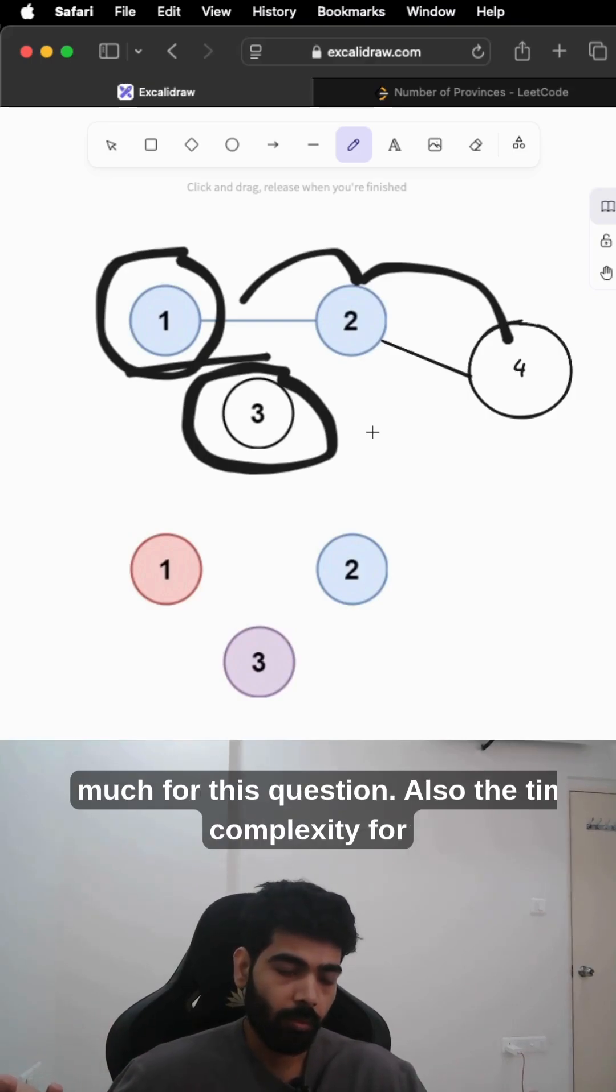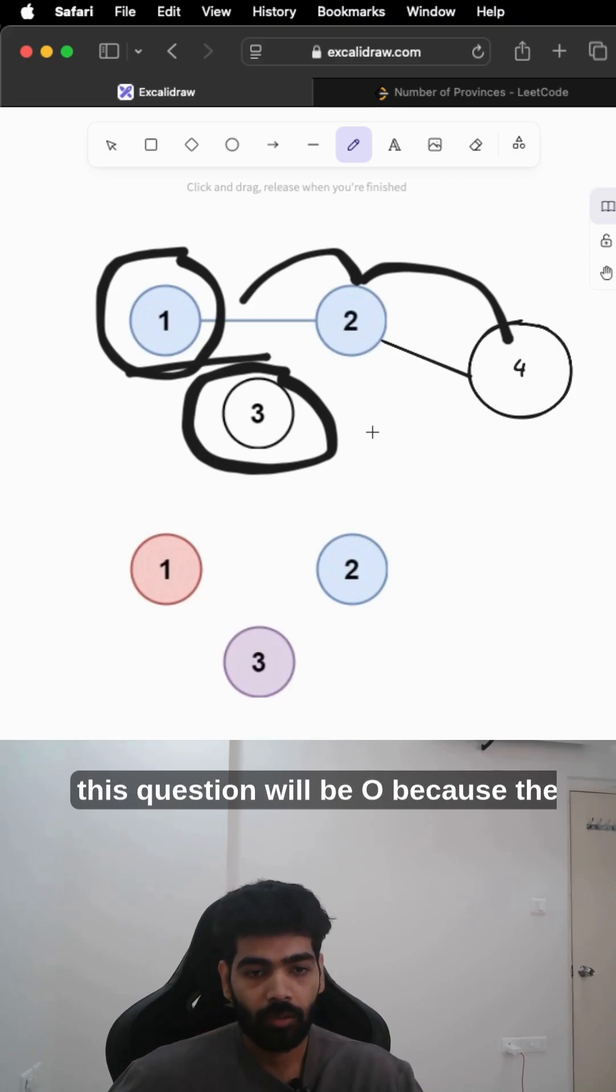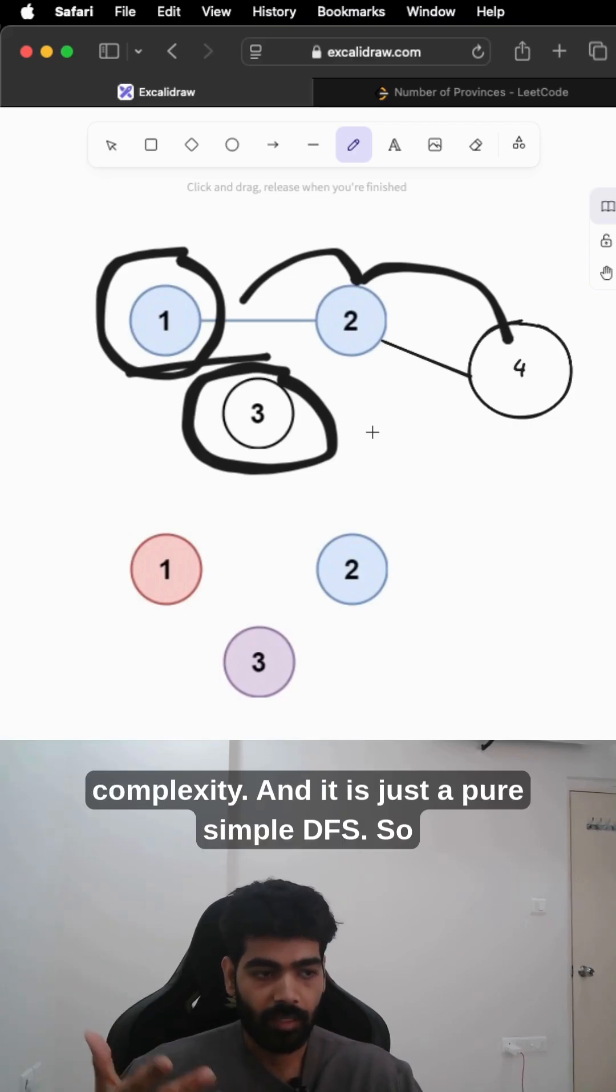That's pretty much it for this question. The time complexity is O(n²) because the DFS takes O(n²) as time complexity, and it's just a simple DFS traversal.